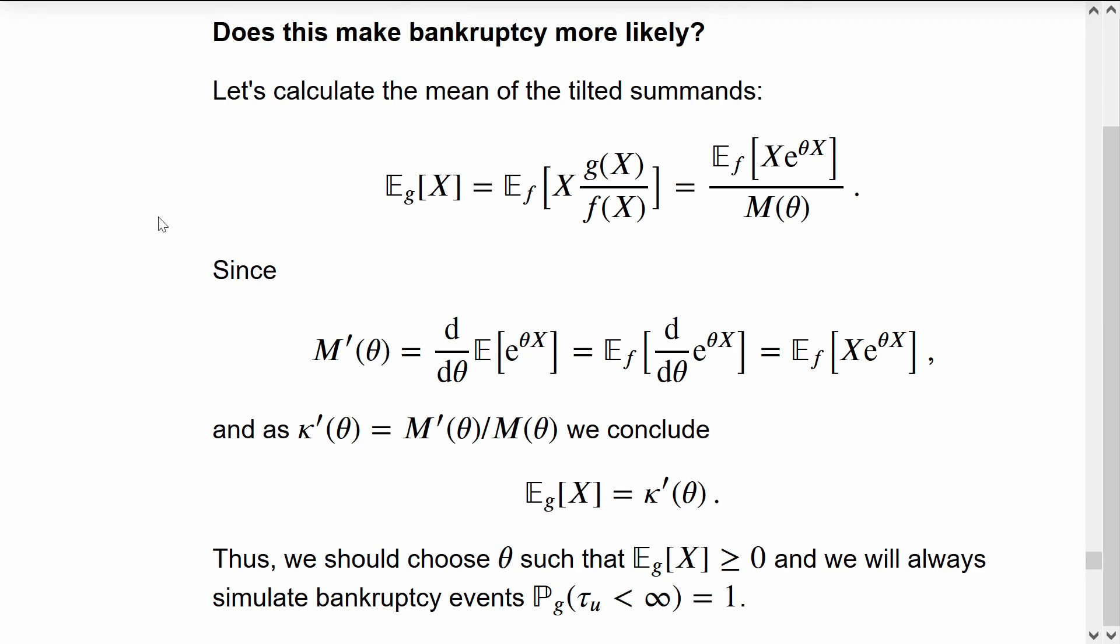We only want to use importance sampling to increase the likelihood of the rare event happening. To see whether we achieve this or not, let's look at the mean of the X variables under the proposal distribution.